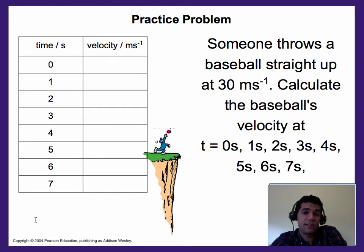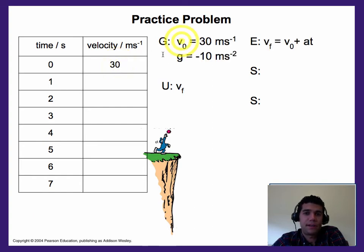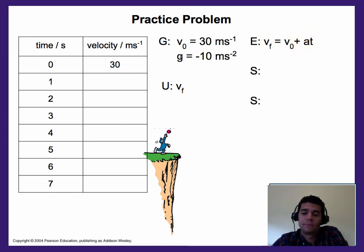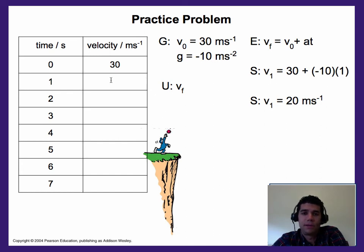Assuming you paused and tried this, let's go through the answer using the given-unknown-equation-substitute-solution method — the GUESS method. My initial velocity at time zero is 30, so I'll plug that in as given information. We know gravity equals negative 10 — I'll call down negative in this case. We're looking for final velocity after one second, using the equation where A equals gravity, or negative 10. Plugging in those values — 30 for initial velocity, negative 10 for acceleration, and 1 for time — I get 20 meters per second. Gravity is slowing the ball down as it goes up, which is why we get 20.